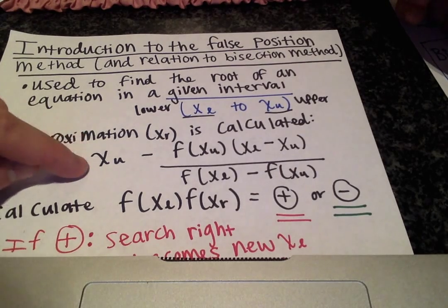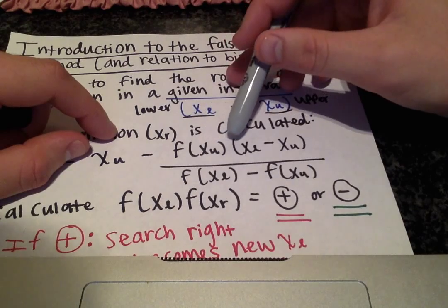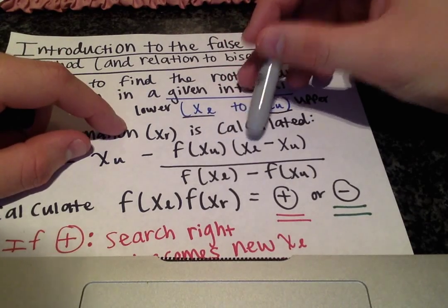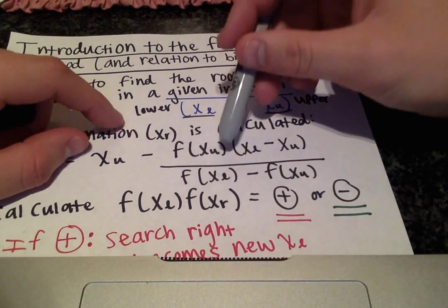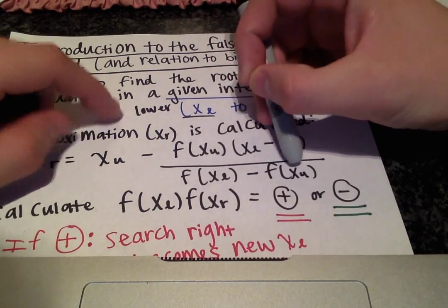Here x_r equals x sub u minus f of x sub u multiplied by x_l minus x_u divided by f of x_l minus f of x_u.